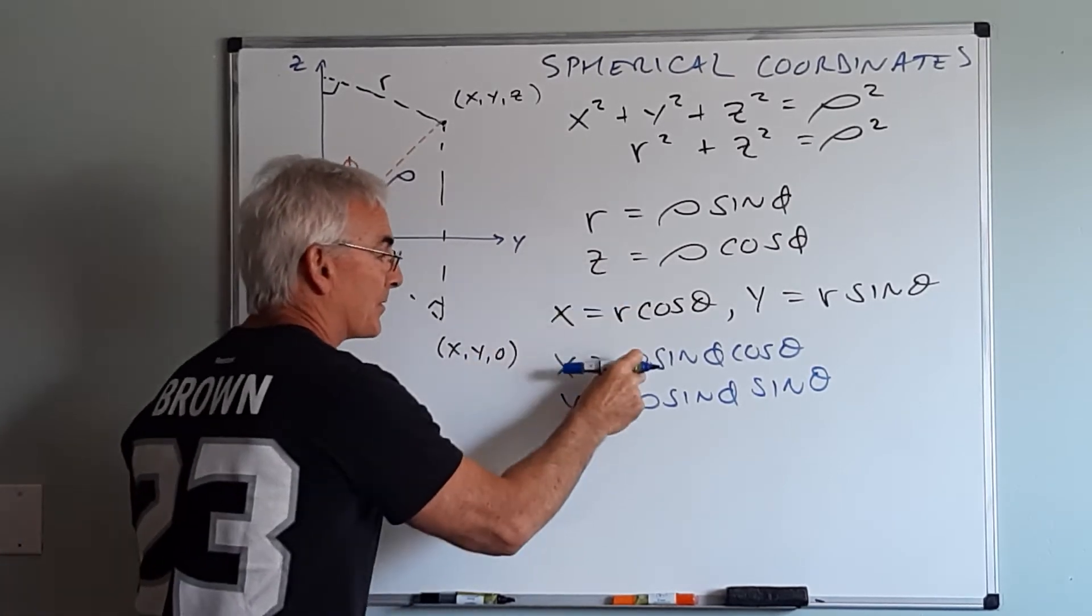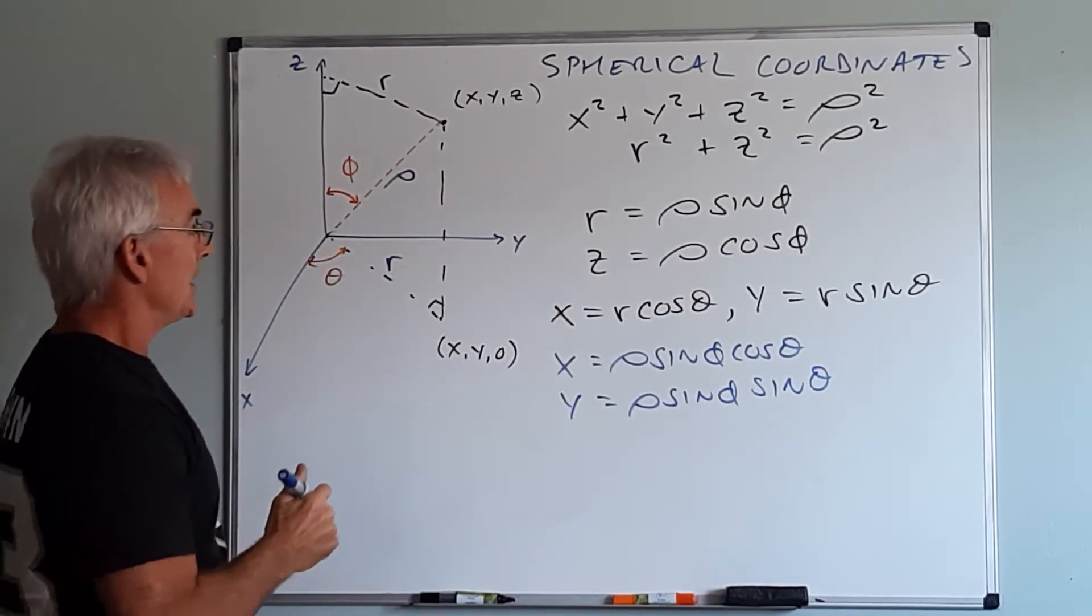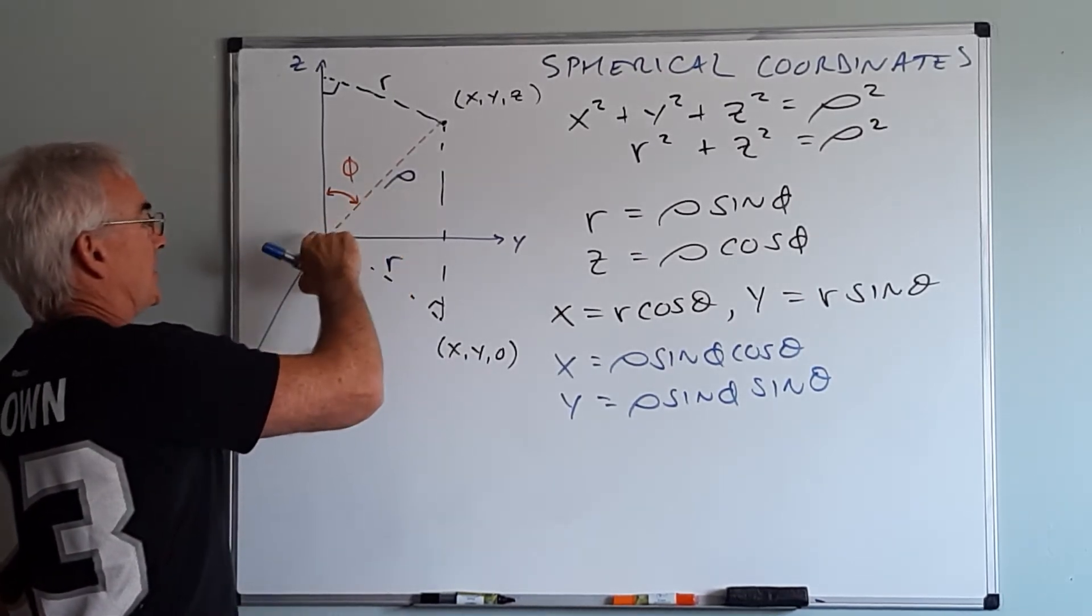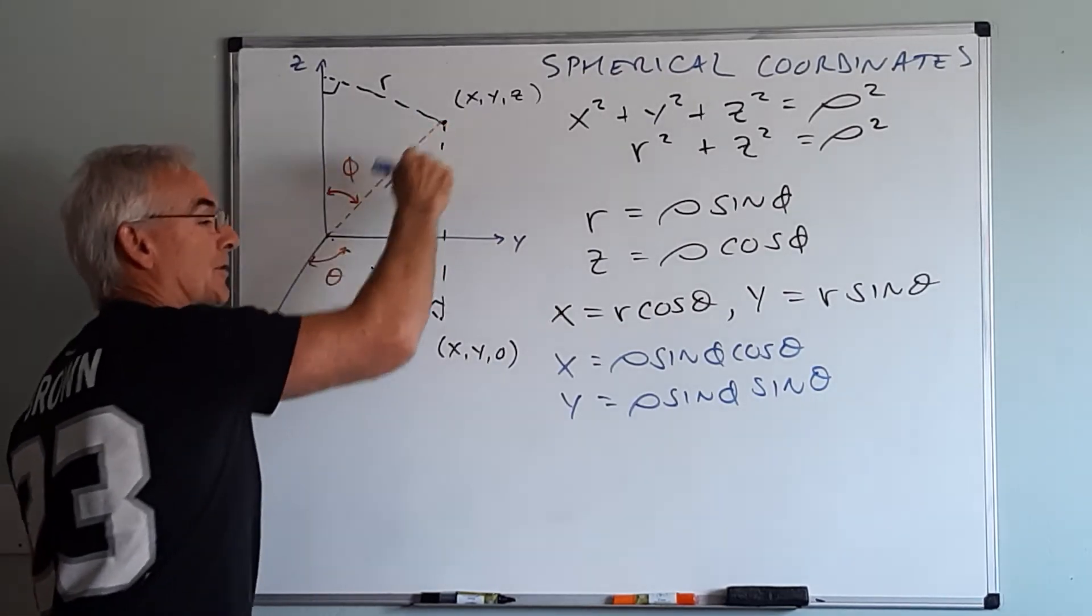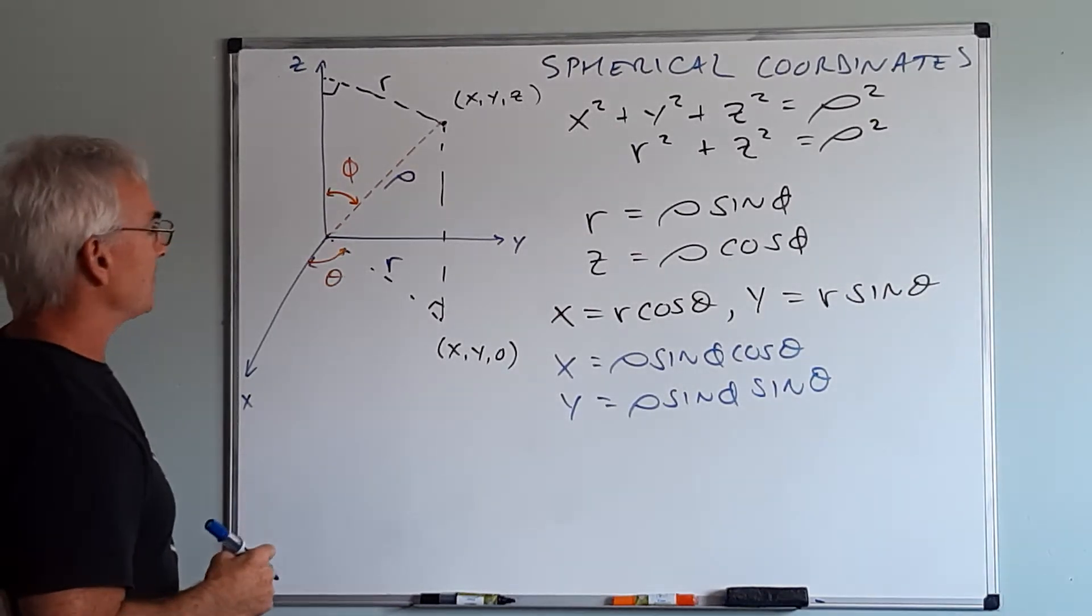These are the three transformations we use then when we go from rectangular to spherical. Now rho is the easiest of the bunch, that's just going from the center to the outer edge, much the same way that R did in polar coordinates. But what about theta and phi?